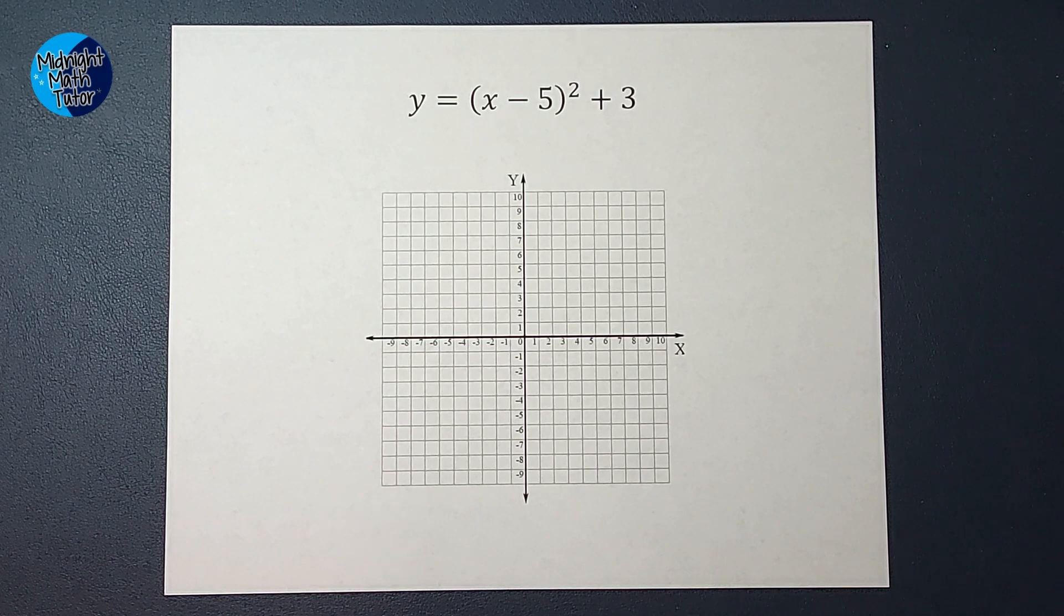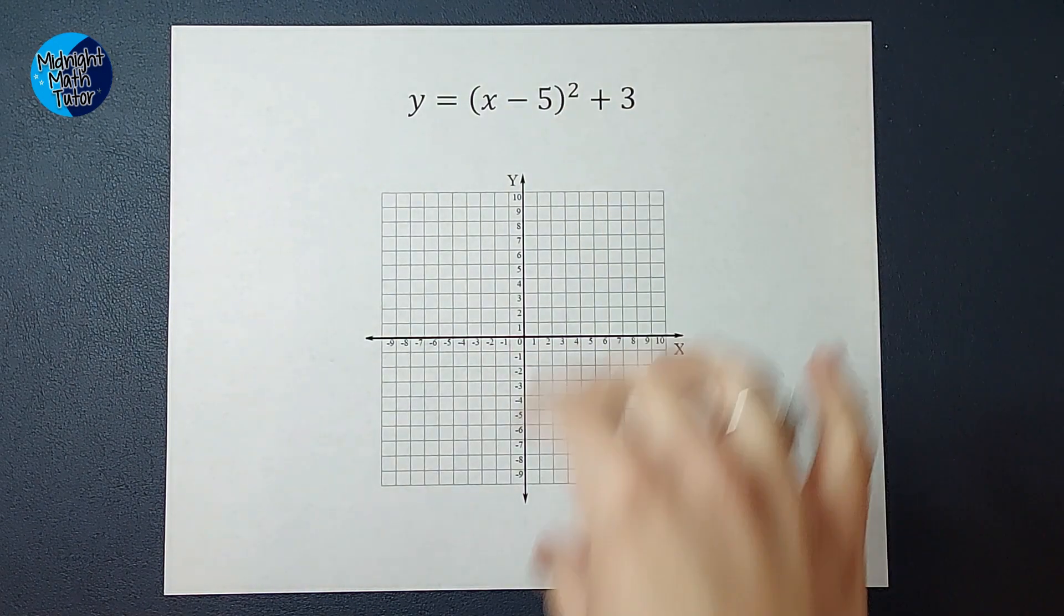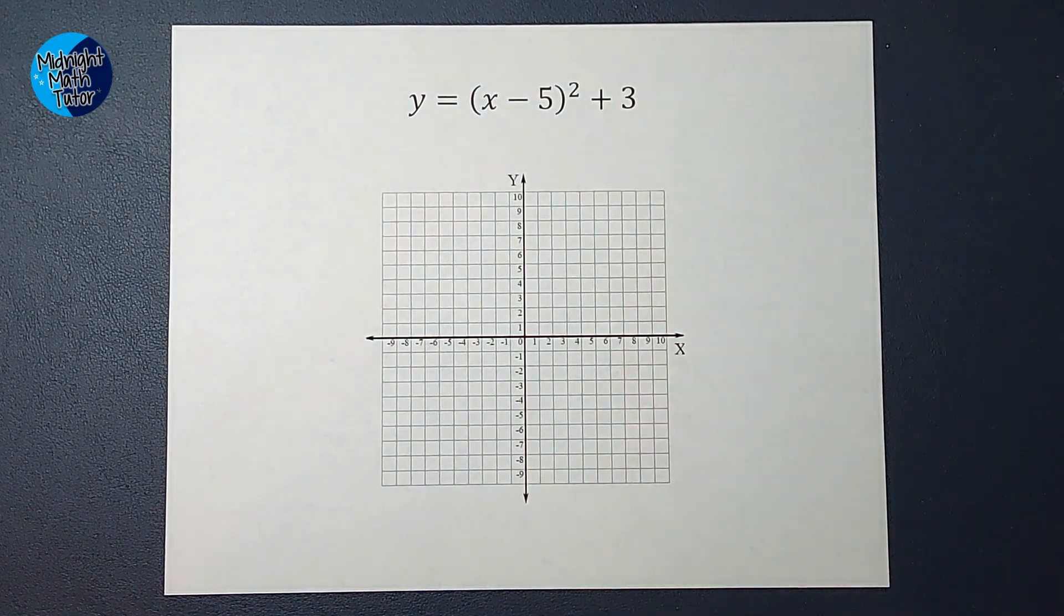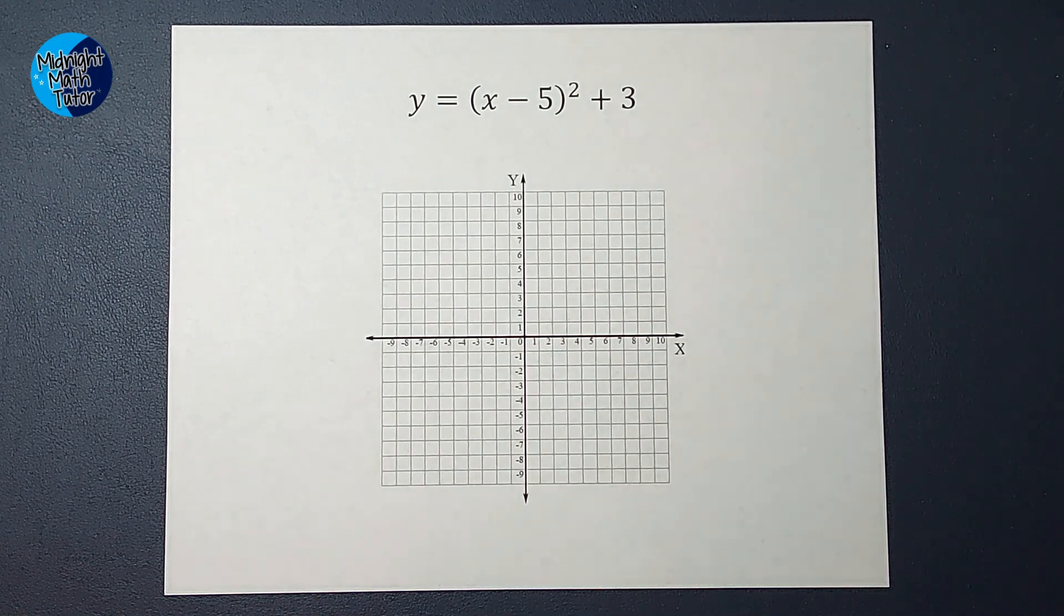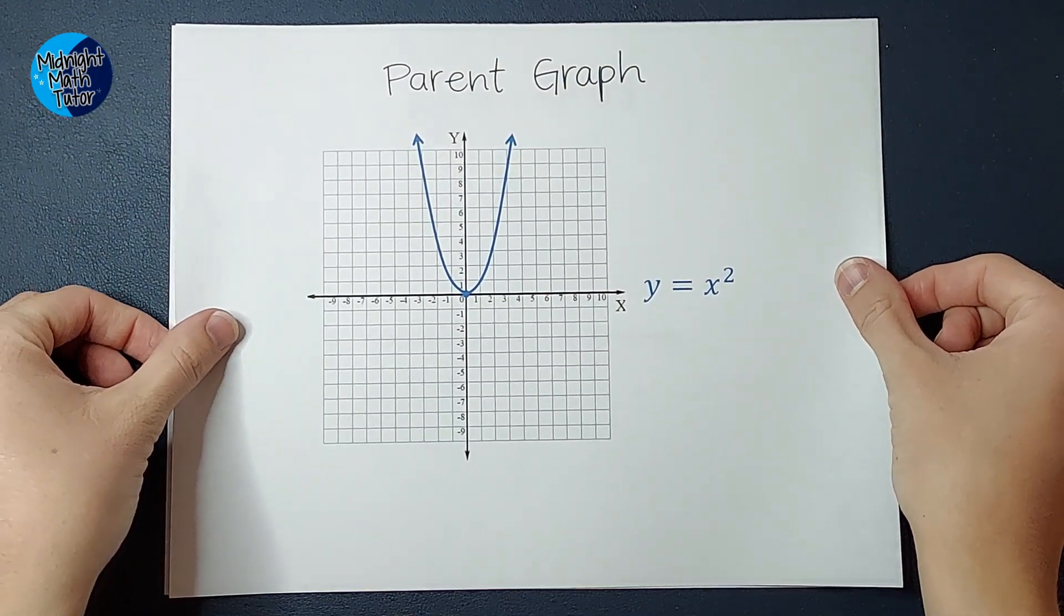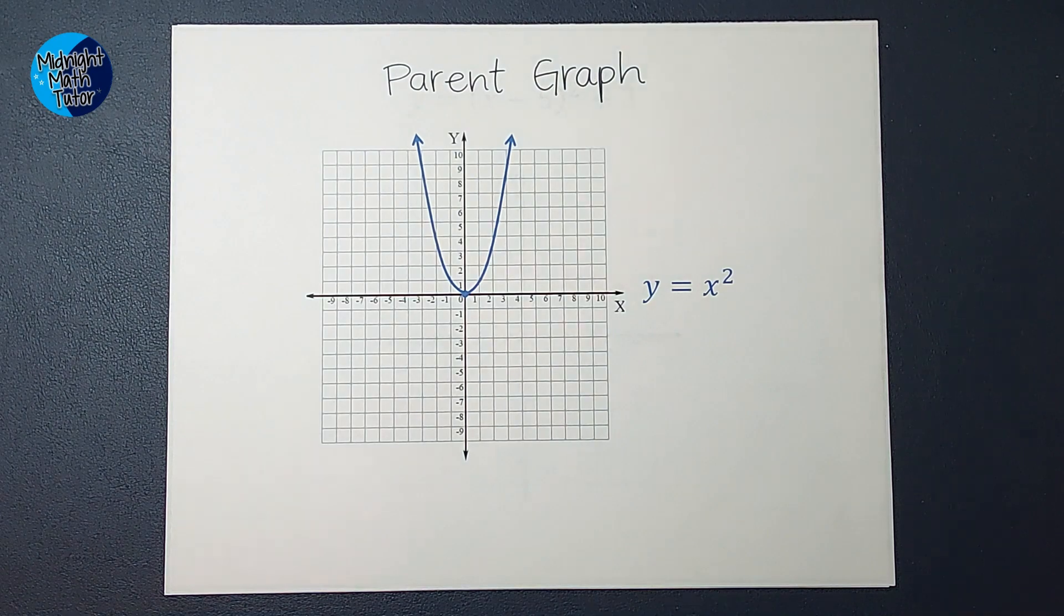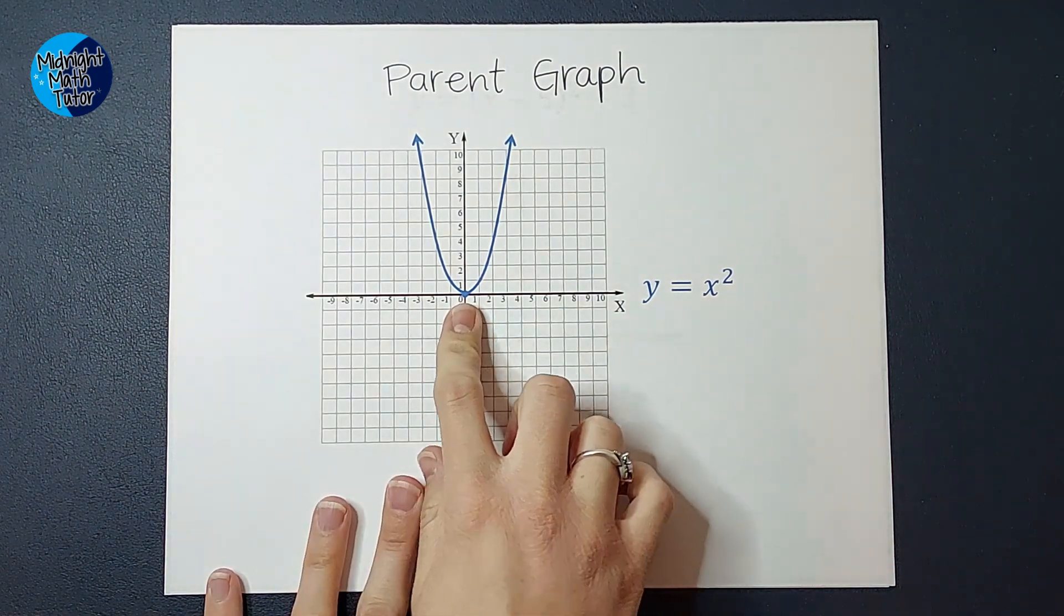When I have an equation like this where the squared is my highest power, we are going to have a parabola. This is what we call the parent graph. If I were just being asked to graph y equals x squared, this is what it would look like.